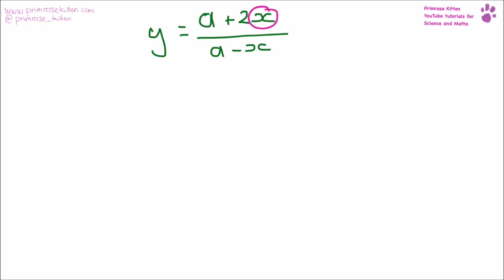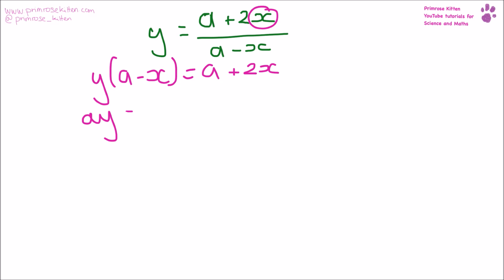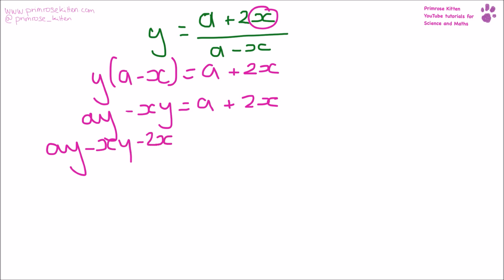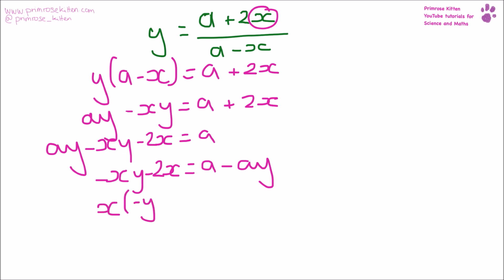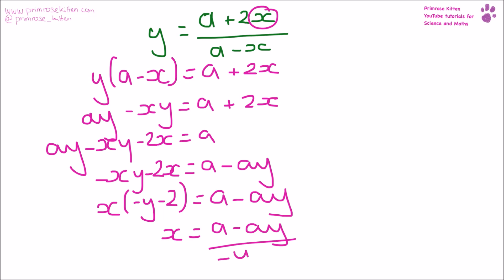Here I want you to make x the subject of the formula. We have something in the bottom, so we need to times that up: y(A − x) = A + 2x. Multiply out those brackets: Ay − xy = A + 2x. Get all x's over on one side: Ay − xy − 2x = A. Everything that isn't x over to the right-hand side: −xy − 2x = A − Ay. Put x outside into a bracket: x(−y − 2) = A − Ay. Then we can divide: x = (A − Ay) over (−y − 2).